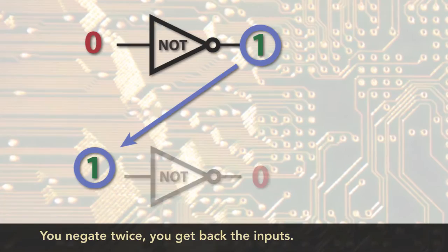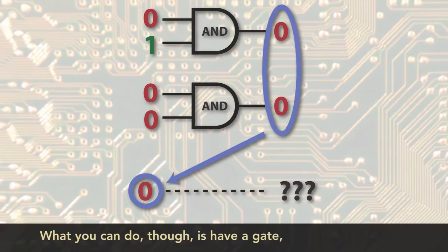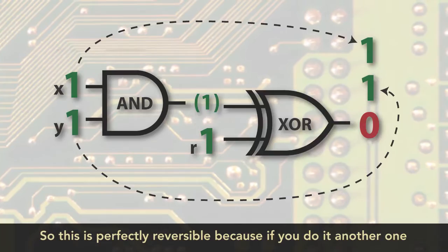The negation is reversible. If you negate twice, you get back the input, whereas the conjunction is not. What you can do, though, is have a gate, and it's called the Toffoli gate. So this is perfectly reversible, because if you do it another one, that will cancel it, and you get that X, Y, R.